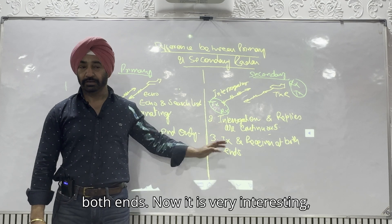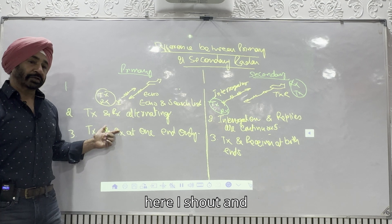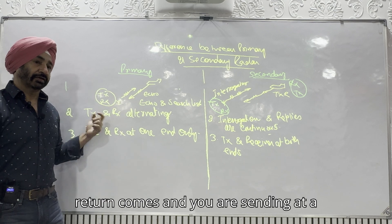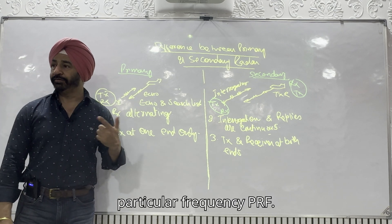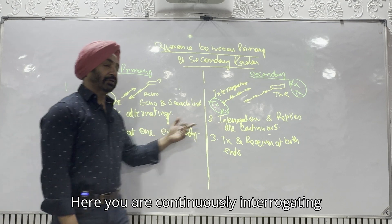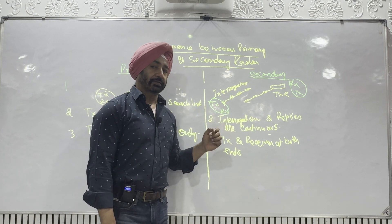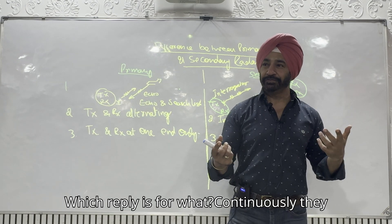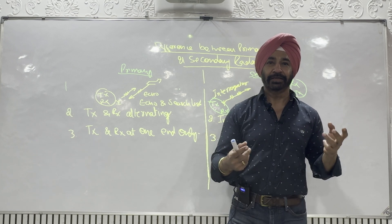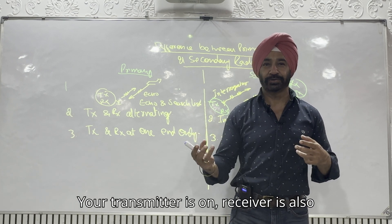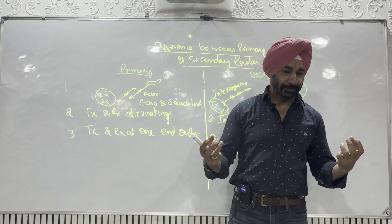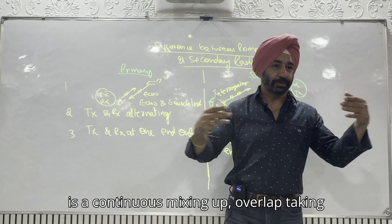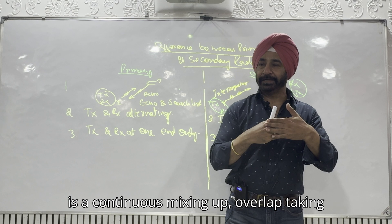Now there is a problem. Since both sides are continuously operating, which reply is for what? They are continuously interfering on the same frequency — your transmitter is on, receiver is also on; at the other end, transmitter is on, receiver is on. Where is the reference? Which reply is for what? There is a continuous mixing up and overlap of information.